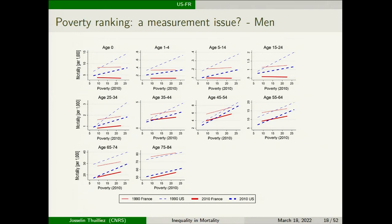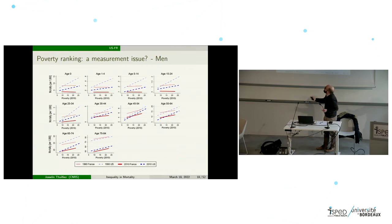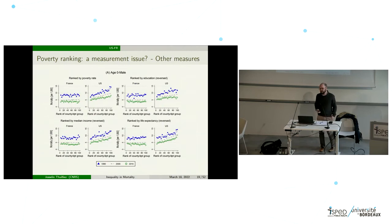Another issue is that there is much more inequality in the US than in France — the poorest regions in the US are probably much poorer than in France. To account for this, instead of taking the poverty rate we just take the value of poverty in absolute terms, and we observe that the range of income or poverty inequality is much lower in France, but the basic pattern remains the same — the gradients are not affected by using either the rate of poverty or the direct poverty definition.